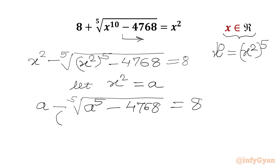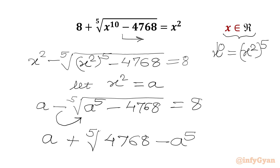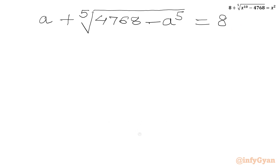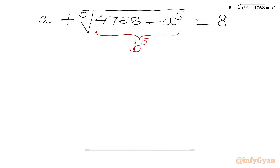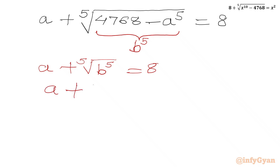So our equation will become: a minus the fifth root of a to the power 5, minus 4768, equal to 8. Now I will take this minus sign into the radical. So we can write: a plus the fifth root of 4768 minus a to the power 5, equal to 8. Now we will use substitution — let this radicand equal to b to the power 5. So the equation becomes: a plus the fifth root of b to the power 5 equal to 8, or a plus b equal to 8.